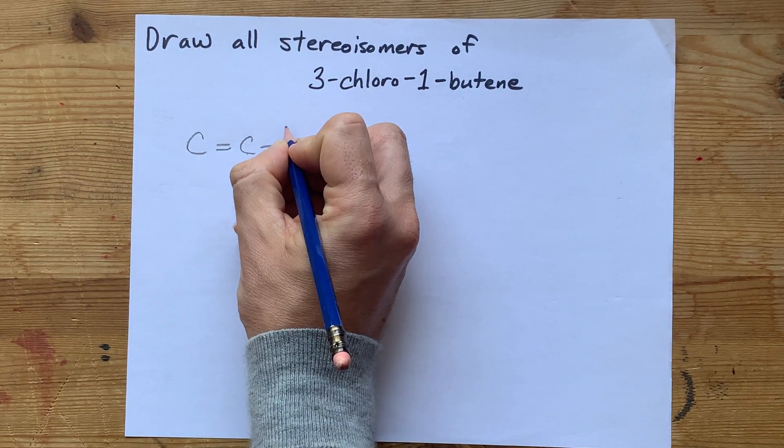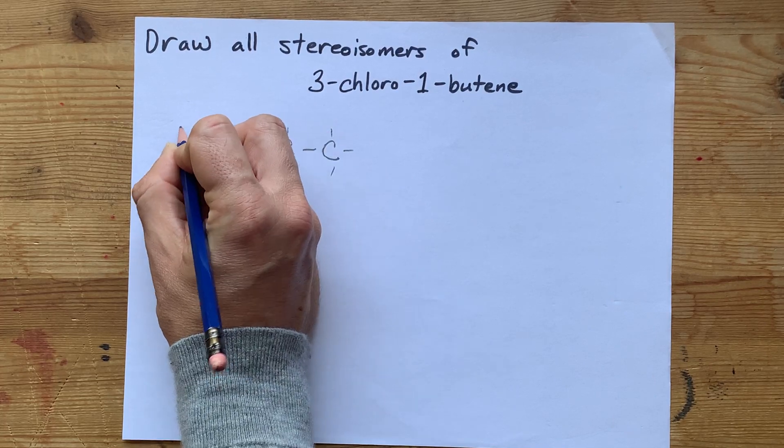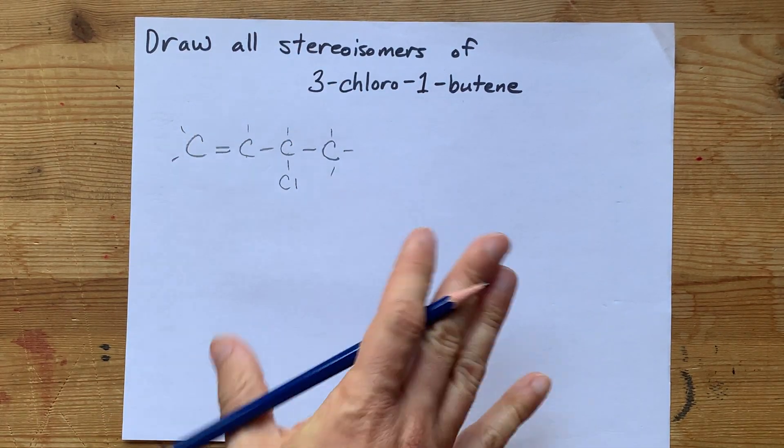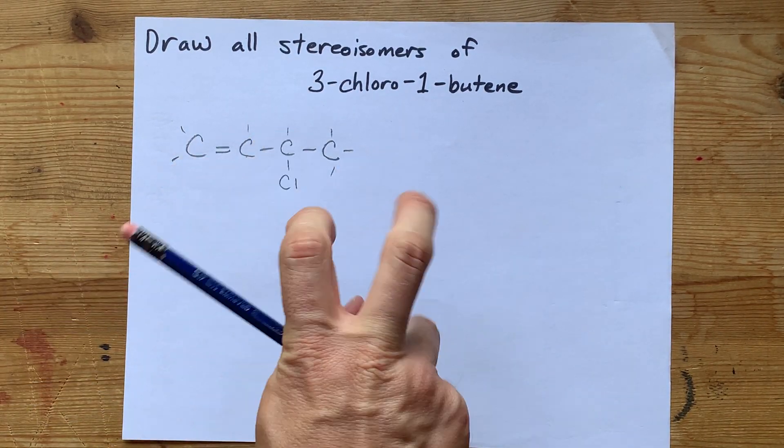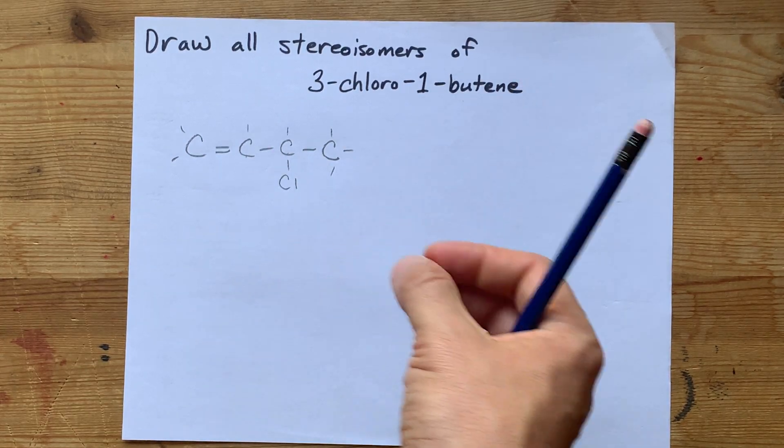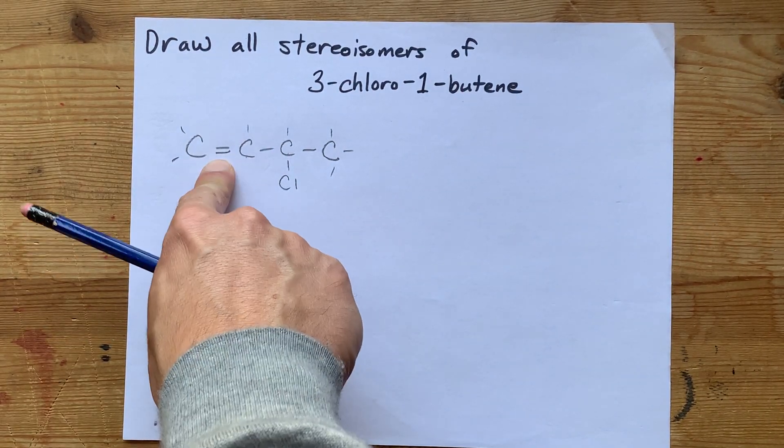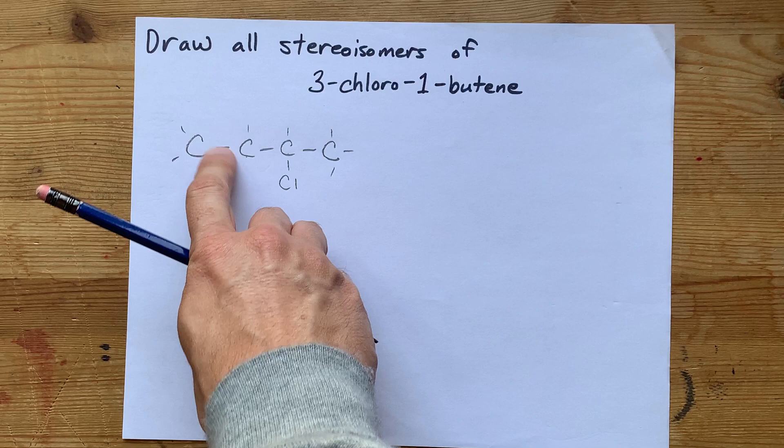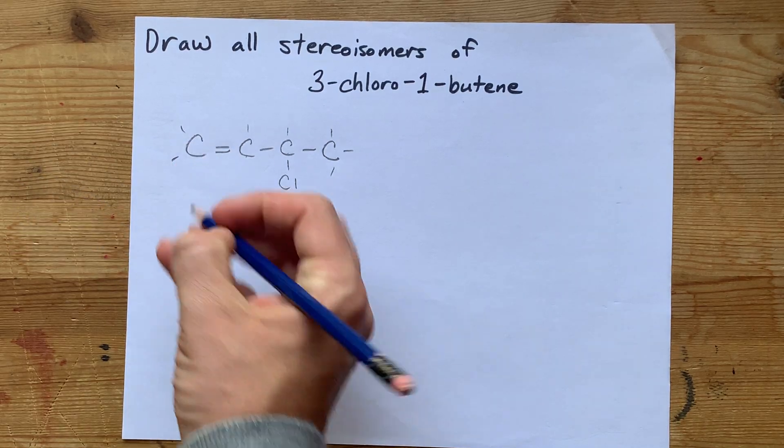Adding hydrogens to complete the structure. Now, I thought for a moment that I was going to have cis and trans or E and Z isomers for this double bond. But no, because it's at the end, I just have two H's here. There are no cis and trans isomers there.